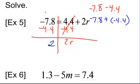Okay. And line up that decimal. Make sure. So that's negative 12.2 equals 2r.